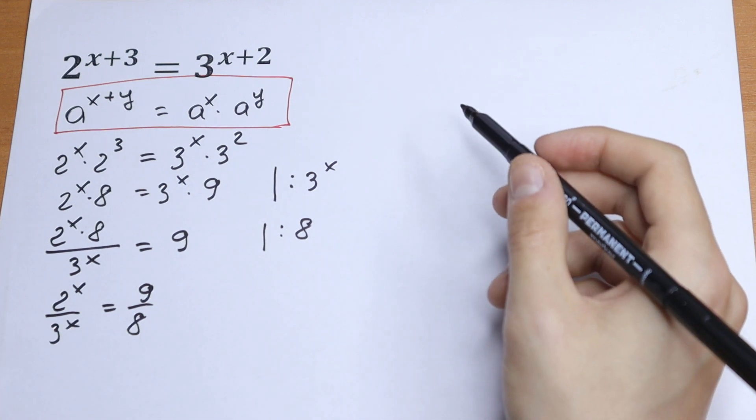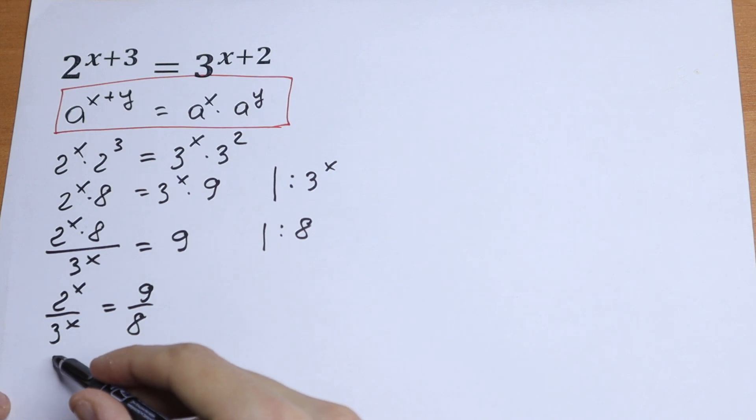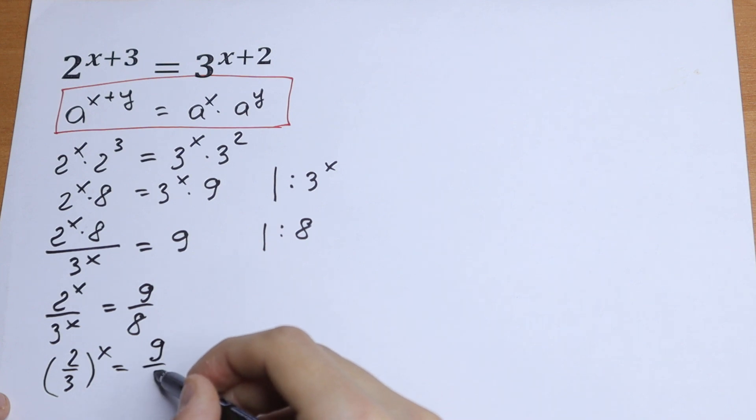We have our x's on the left and our 9 over 8 on the right. If we have different bases but same exponent, we can write it in one parentheses. 2 over 3 to the power x equal to 9 over 8.